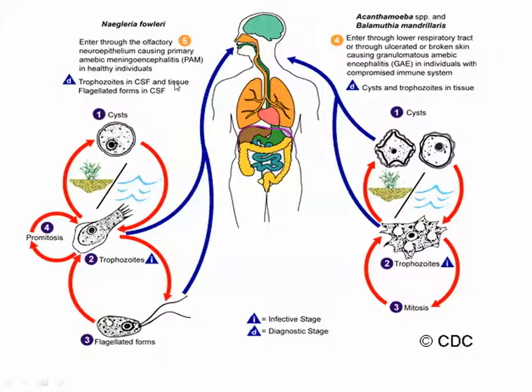Moving on to the other free-living parasite — Acanthamoeba. Acanthamoeba is an infectious parasite that can cause infection through the lower respiratory tract, causing ulceration, and can also enter through broken skin. It causes amoebic encephalitis, pain, tissue damage, and granulomatous amoebic meningocephalitis affecting the central nervous system.